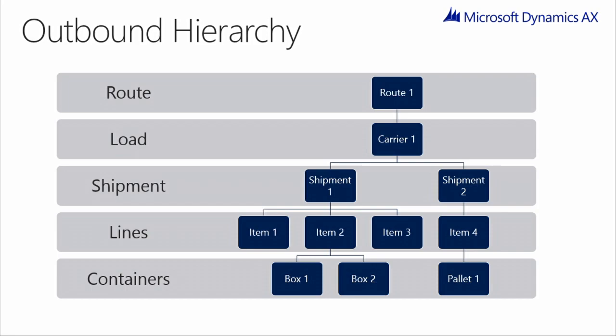For example, truckload, LTL, intermodal, rail, or parcel. Once a load or shipment is released through the WAVE process, they will progress through the defined workflow. Ultimately, the load or shipment will reach the shipping dock and be loaded onto a trailer or container for shipping. The final step is to indicate that a load or shipment is complete and departed from the facility, which happens at the ship confirmation process. Once a load or shipment has been ship confirmed, it is ready for invoicing and can no longer be maintained.